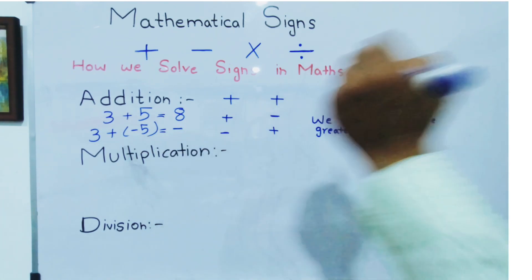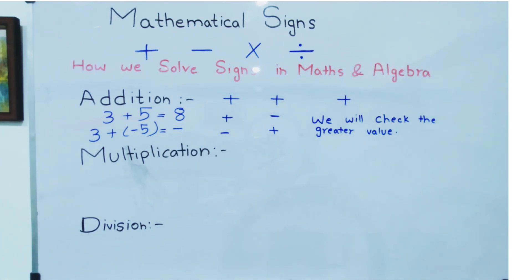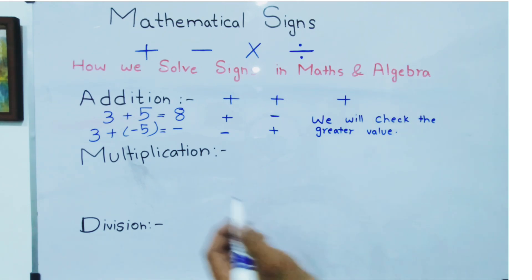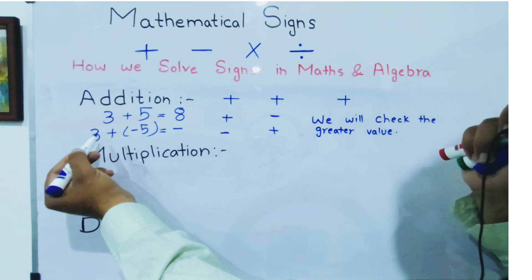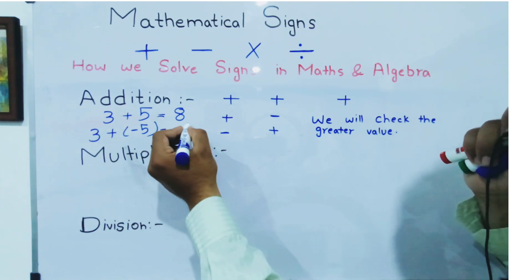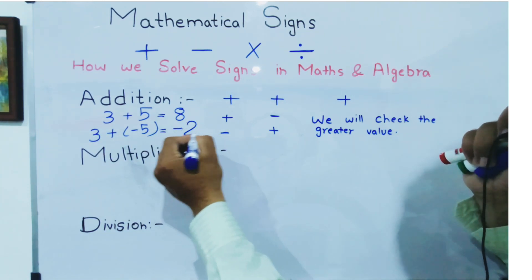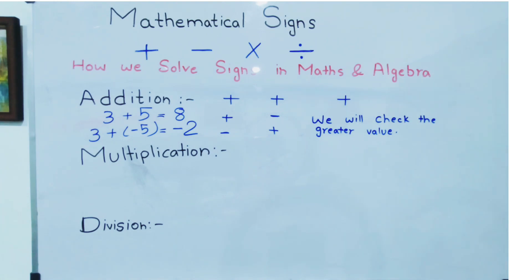If both signs are different, we will subtract the values — meaning five minus three — then the answer will be minus two, a negative sign.